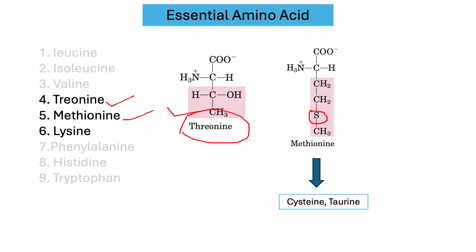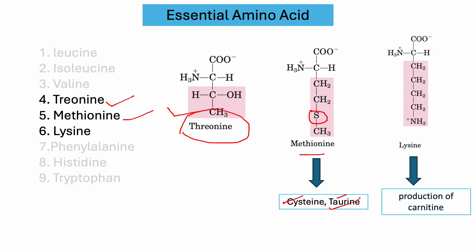Another essential amino acid is methionine. Methionine is a sulfur-containing amino acid and plays a vital role in forming other amino acids, such as the sulfur-containing amino acid cysteine, and also taurine — although taurine is not proteinogenic and not essential for humans, it is essential for cats, with multifunctions including membrane stabilization, osmoregulation, and antioxidative effects. Methionine is also a precursor for the hormone ethylene. Another essential amino acid, lysine, is very important for the production of carnitine, which is important for the synthesis of fatty acids.